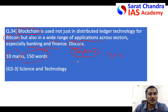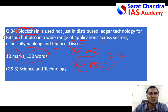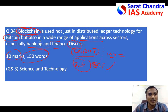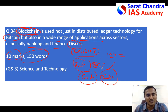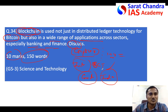In the introduction, write elaborately about what blockchain technology is — around five to six lines — so the evaluator understands you know the technology before discussing its applications. For the conclusion, particularly in any science and technology question, mention what India is doing regarding that technology, whether India has any plan or strategy for using that particular application.